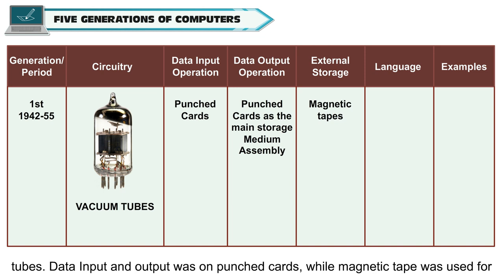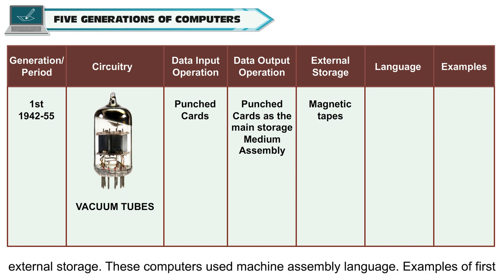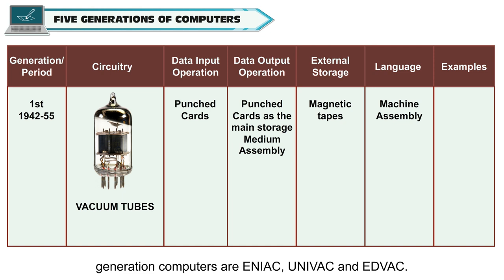These computers used machine assembly language. Examples of first generation computers are ENIAC, UNIVAC and EDVAC.